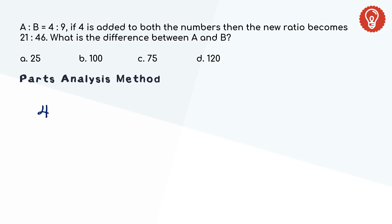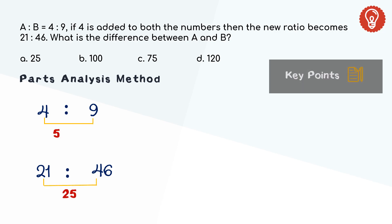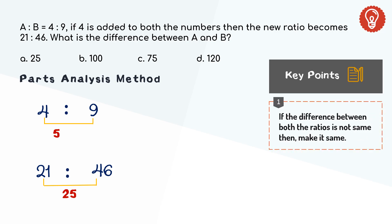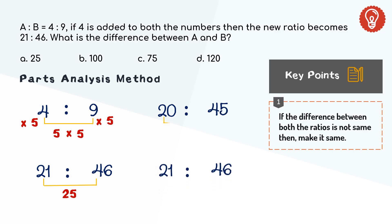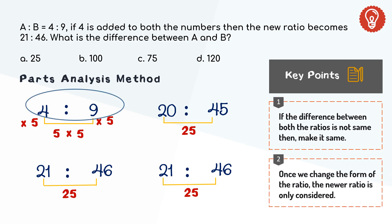Two numbers are in the ratio 4 to 9. If 4 is added it becomes 21 to 46. Step 1 is to check the difference between the ratios. Difference between 4 and 9 is 5, and difference between 21 and 46 is 25 — the difference is not the same. Hence we have to make it the same. Multiplying 5 by 5 gives 25, and the other difference is also 25. But if we multiply the difference by 5, the ratio should also be multiplied by the same number. Then the ratio becomes 20 to 45. Now the difference between the ratios is the same. Once we change the ratio, forget about the old ratio — only the new ratio is considered.